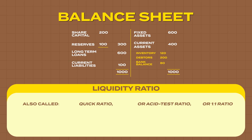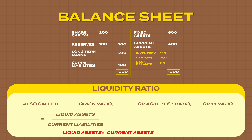This ratio should be minimum 1 is to 1. The formula is pretty simple and logical: liquid assets divided by current liabilities. Liquid assets are current assets minus inventory. In this case, if you exclude the inventory, the liquid assets are 280 against current liabilities of 100. So the ratio is 2.8 is to 1. The ideal ratio is 1 is to 1.